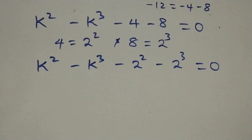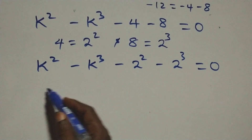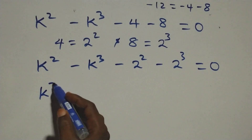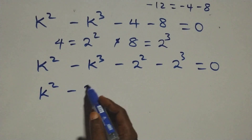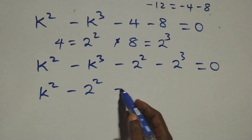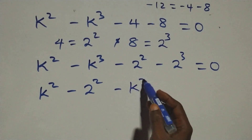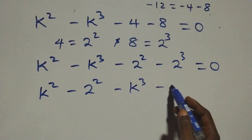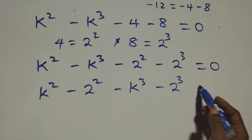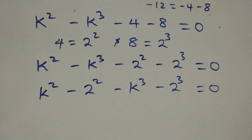Then we rearrange, bringing the powers of 2 together. We have k squared minus 2 squared, and also the power of 3 together: minus k cubed minus 2 cubed, equals zero.